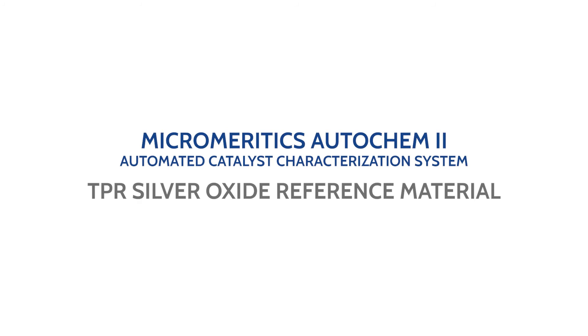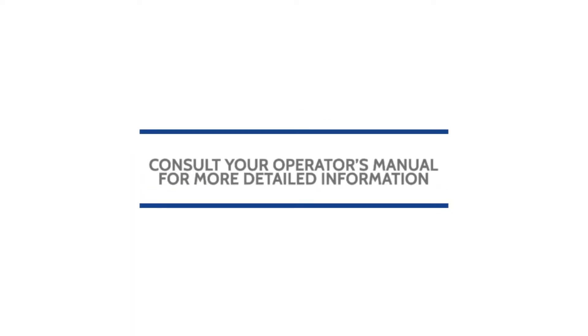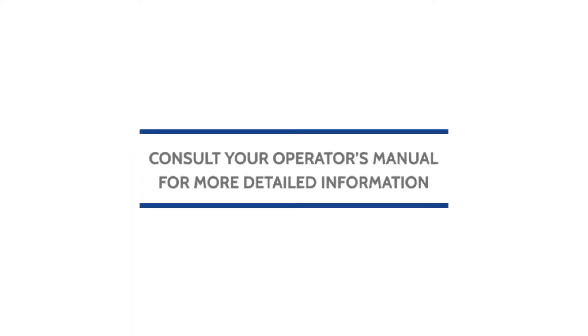This video will show you how to run a temperature programmed reduction with silver oxide reference material on the Micromeritix AutoChem 2 automated catalyst characterization system. Remember to always consult your operator's manual for more detailed information.